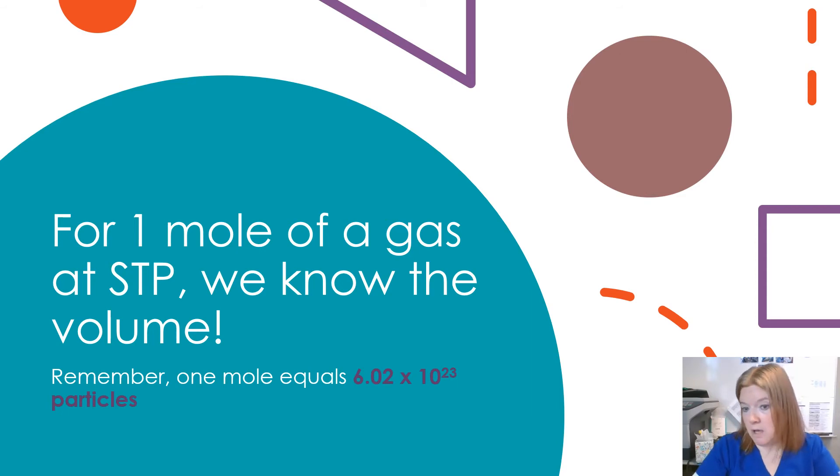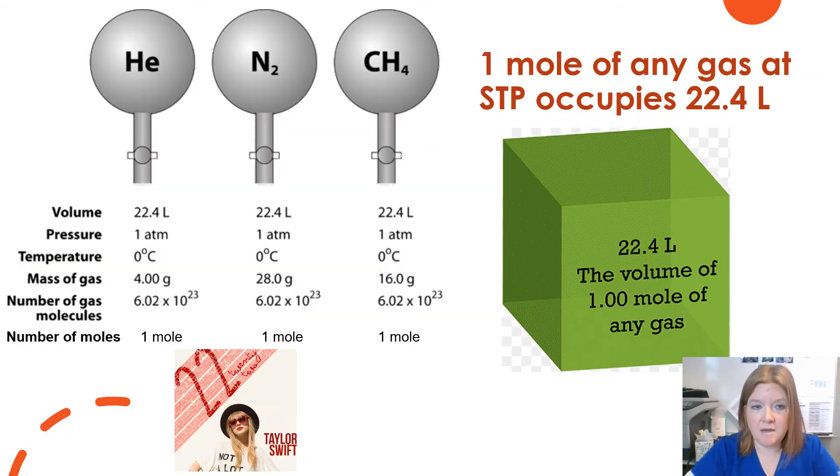Now, another piece of information. For one mole of a gas at STP, we know the volume. So if we have one mole of a gas and we have that gas at STP, automatically, we know the volume. So remember, one mole is 6.02 times 10 to the 23rd particles. So if we have one mole, we have that many particles. And for that particular number at STP, we automatically know the volume. And that number is 22.4 liters.